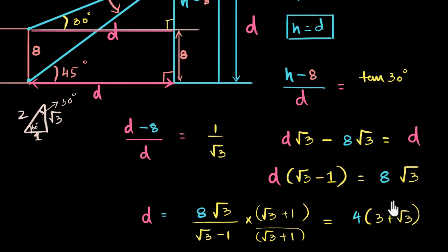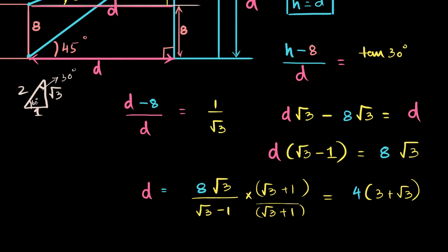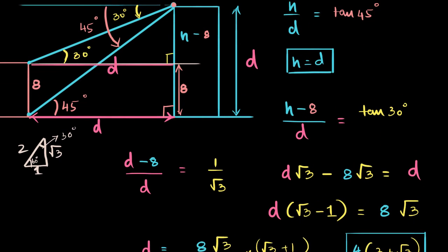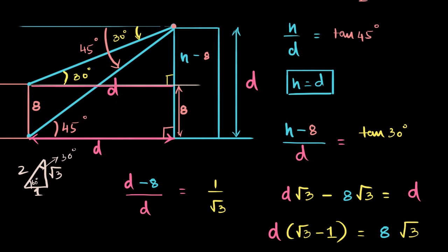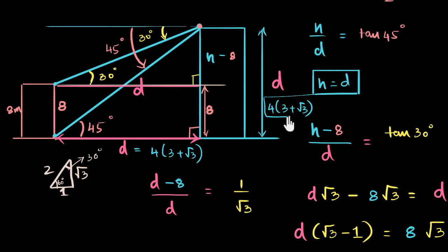Four into (3 + root 3) seems to be the answer for d. Expanding: 4·(3 + root 3) = 12 + 4·root 3. So d equals 4·(3 + root 3), and since h also equals d, the height of the multi-storied building is also 4·(3 + root 3). And we have solved the question.